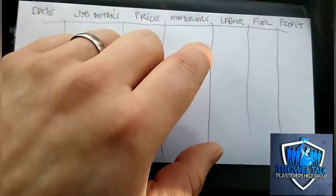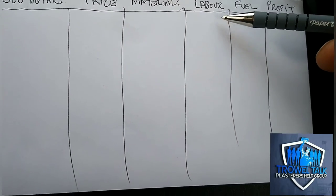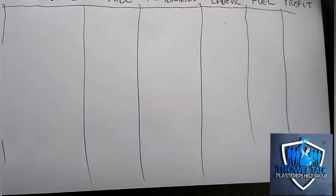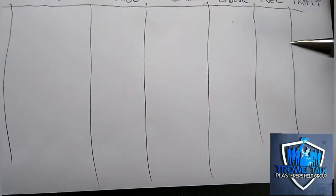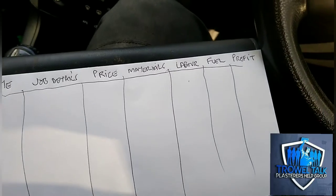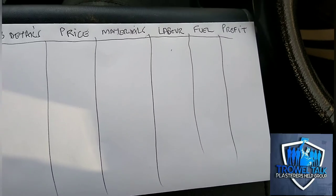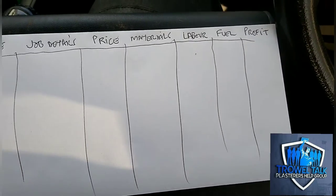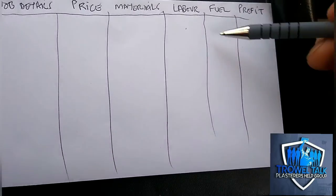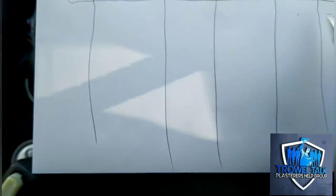For labor, if you're a one-man operation it's basically how many days you've thrown at the job. If it's you and another lad or a couple of other lads, include the labor costs for them in there. Then how much fuel you've used for that job. For example, I've just done one going from Coventry to Stratford-upon-Avon and I'm putting £100 a week in the tank - the job's two weeks long. If you don't include these things, it's easy for them to slip when you're doing lots of small jobs.